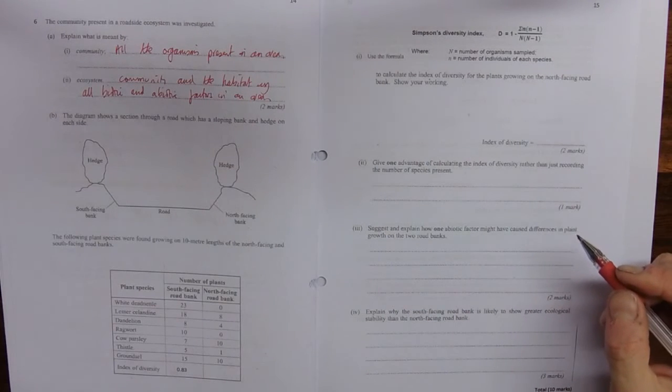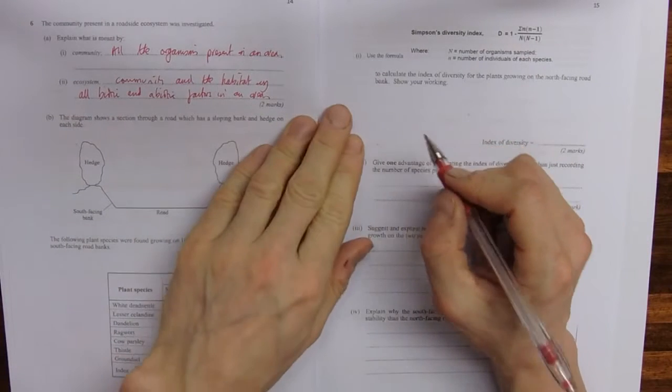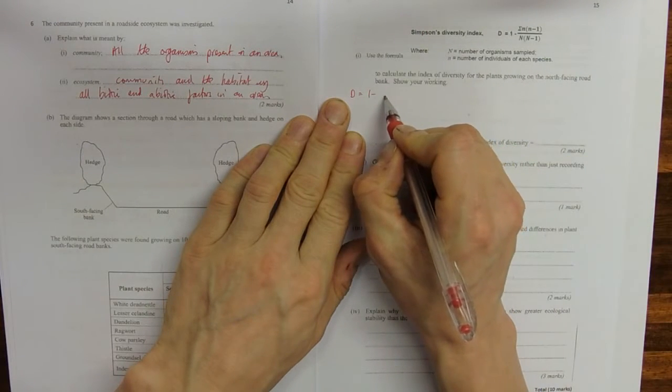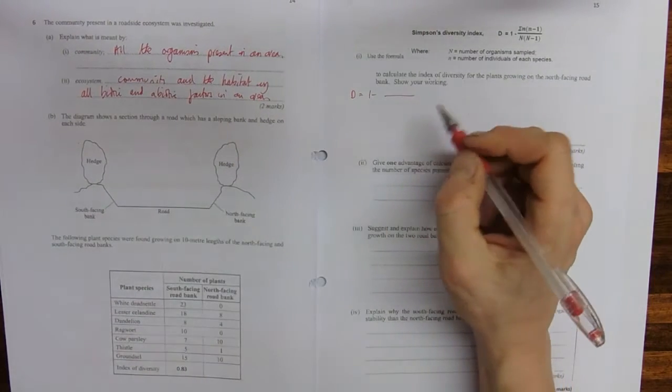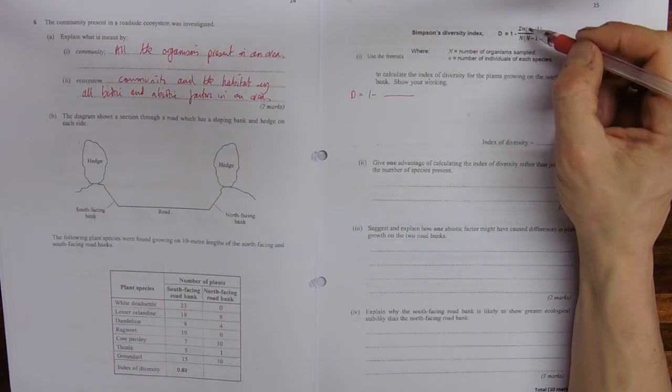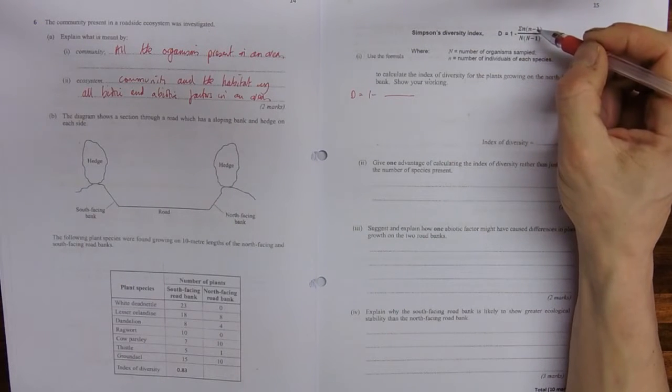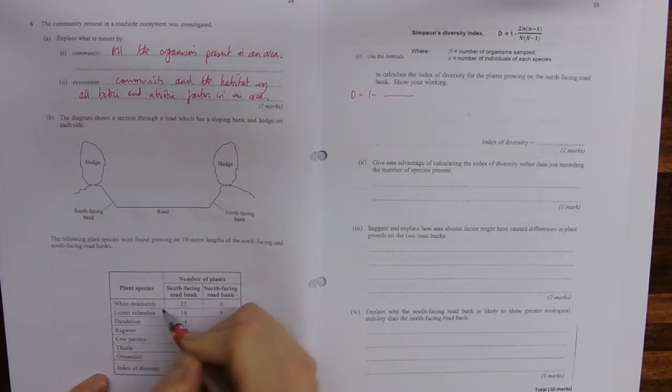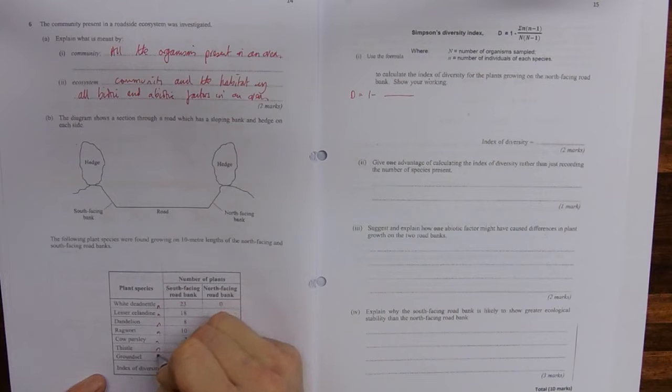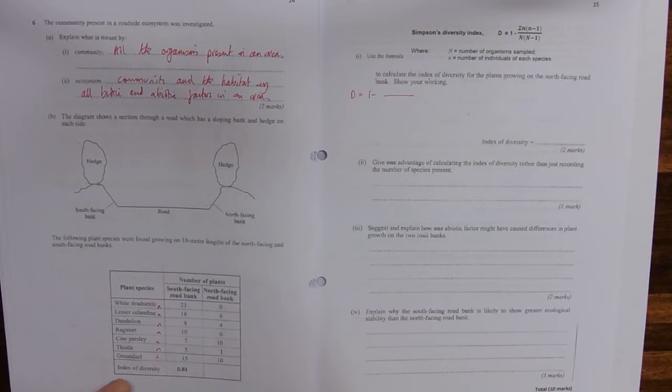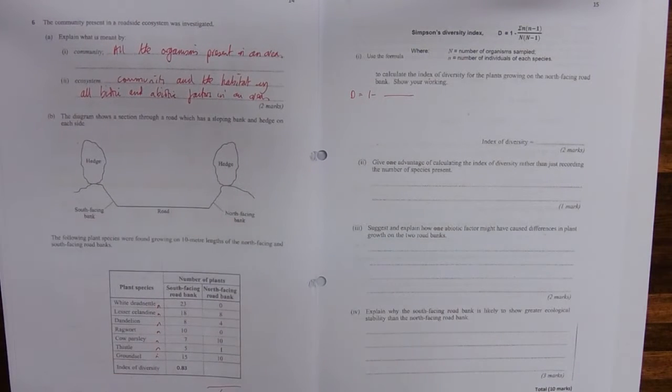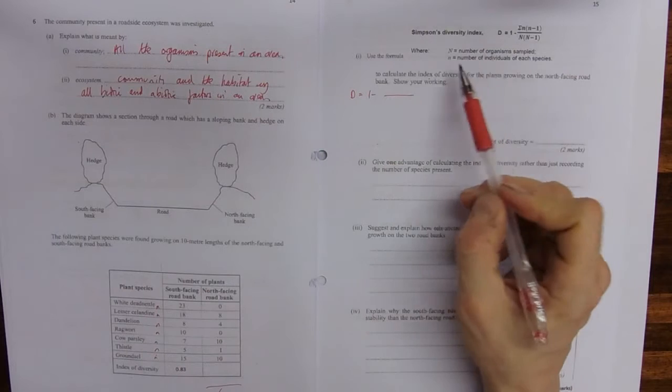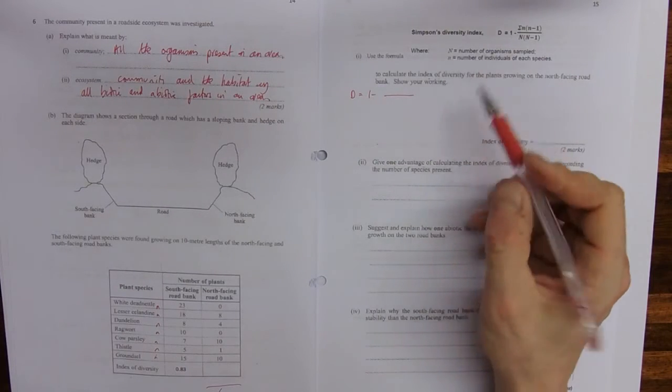So there's not a lot of space, but we're using this equation here. So diversity equals one minus, then we've got some stuff on the top and some stuff on the bottom. So sum of, which means add them up, add up all of the n times n minus ones. So let's have a look. These are all n's. And then the total is big N. So little n's each individual species, the total is big N.